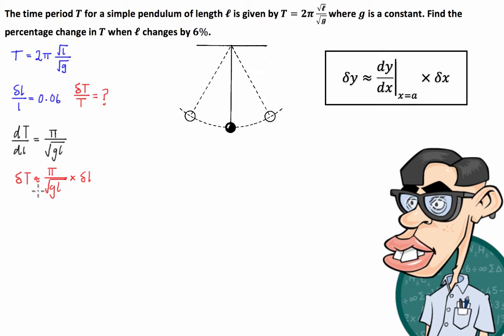So from here, what we're going to do is make the left hand side look like the arrangement that we're looking for in the question, i.e. the percentage change δT on T. So to do that I'm going to divide both sides of the equality by T.